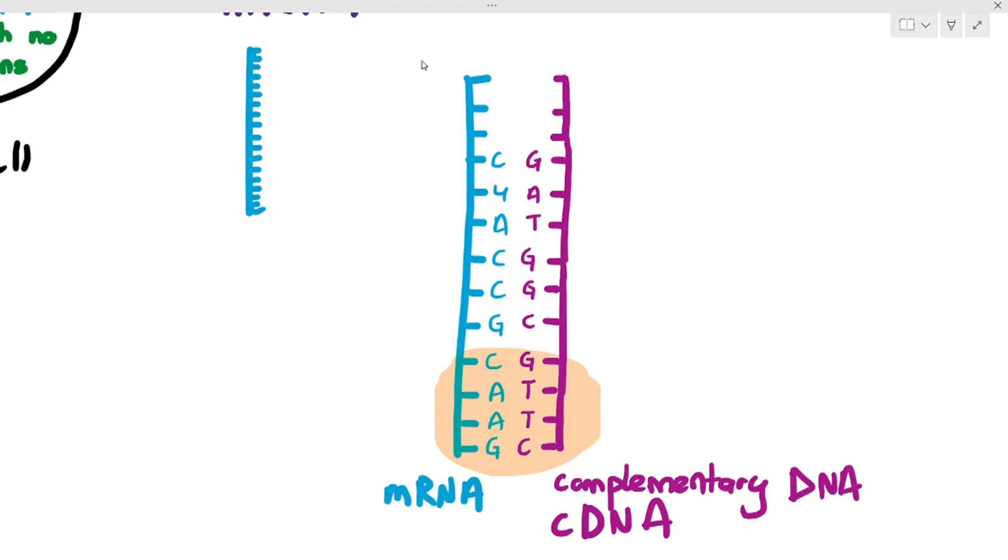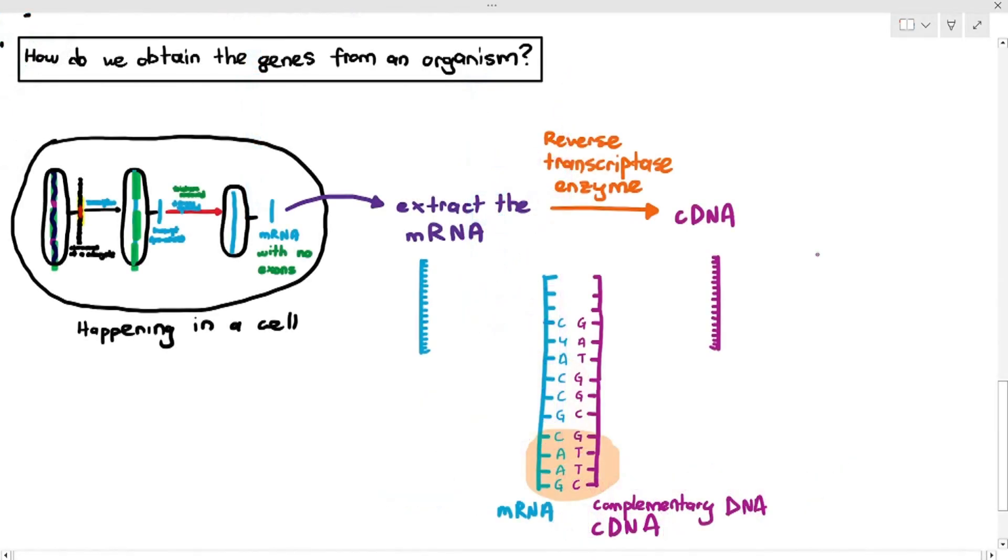So, in this case here, when you get the cDNA, which is complementary DNA, it is a single-stranded DNA. Remember, a gene is made up of double-stranded DNA. How do I make it become double-stranded DNA?